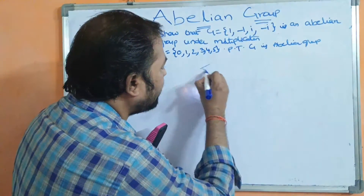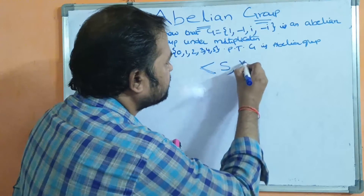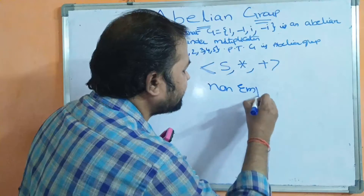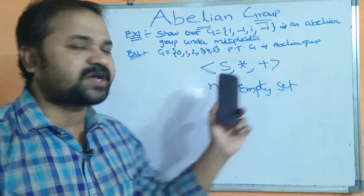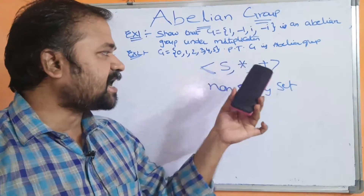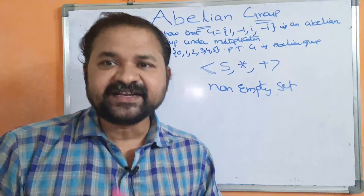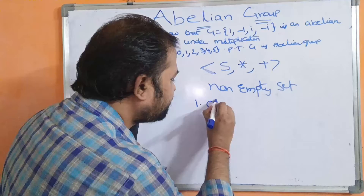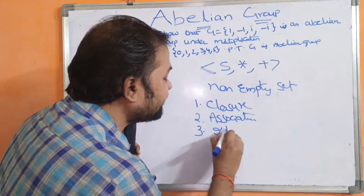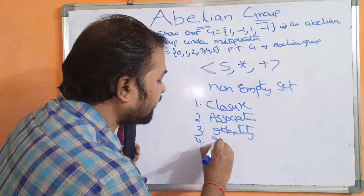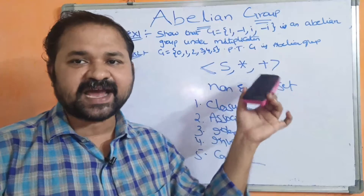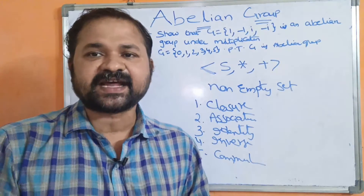Let we have an algebraic system called (S, ★, +). Here S means a non-empty set — the set must contain some elements — and we can perform ★ and + binary operations on the corresponding set. An algebraic system (S, ★, +) is called an abelian group if it satisfies five properties: closure property, associative property, identity element, inverse element, and commutative property.